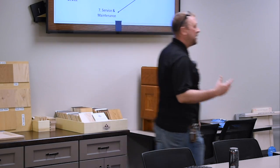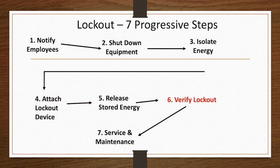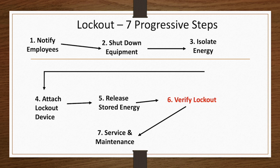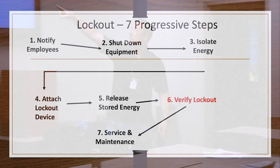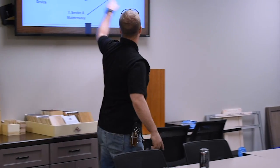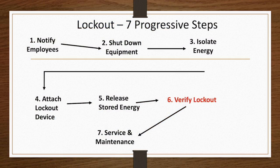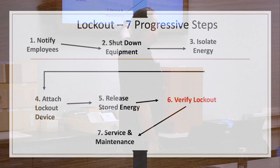Be familiar with the process here. Notify employees. Hey. Tyler. Tyler. Tyler. I'm going to do work on your machine. Don't go on your machine. Notifying you. Then he's going to shut down the equipment. He's going to isolate the energy, attach his device, release any stored energy he needs to release. Verify it doesn't power on. Perform his work. Reverse order to turn it back up.